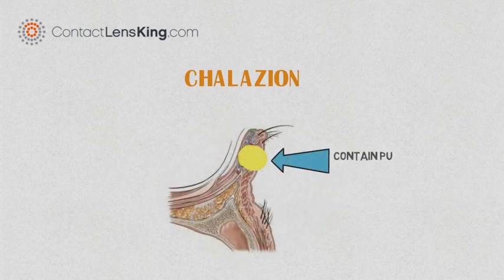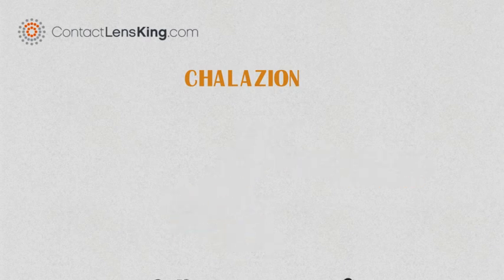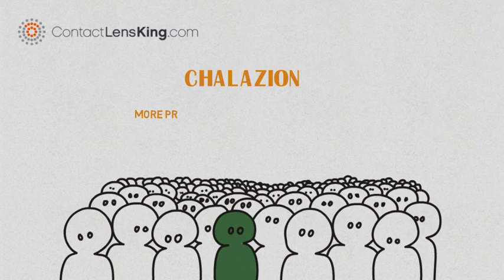These nodules contain pus and fatty secretions that are unable to drain. This disorder is more prominent in people who suffer from blepharitis and rosacea.